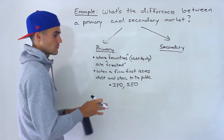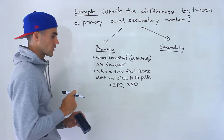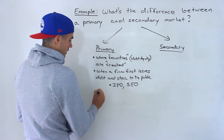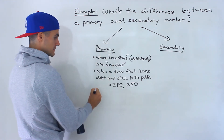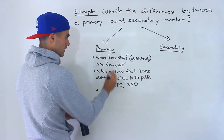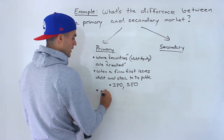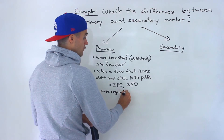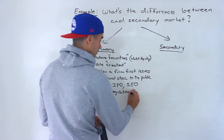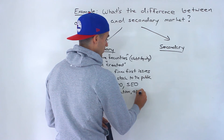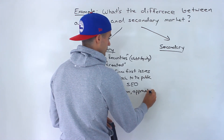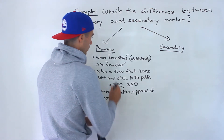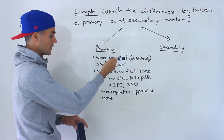We're going to go through this more so in a chapter called raising equity capital. But because it's the first time that these securities are being created, over here in a primary market, there's more regulation. A government has to approve of the issue, so there has to be an approval of issue.